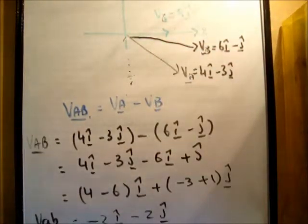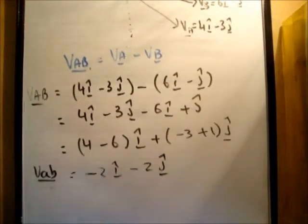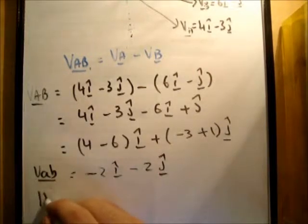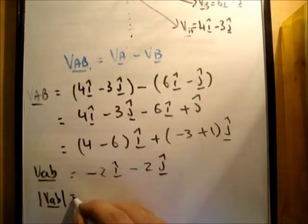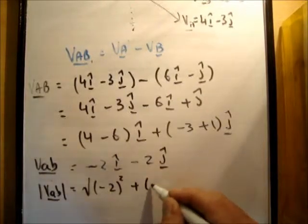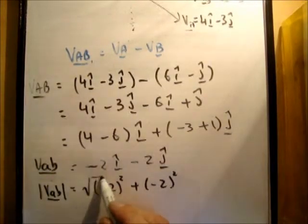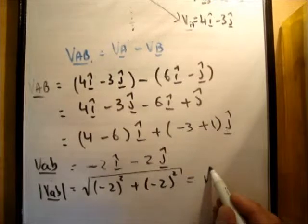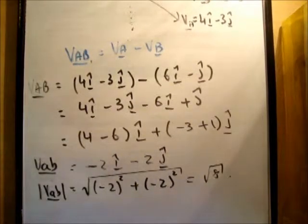So the next thing we need to do is work out the magnitude of this vector. And as I said before, this is just using a bit of Pythagoras. So we get the magnitude of VAB is equal to the square root of negative 2 squared plus negative 2 squared. So that's equal to root of 8. So that's the magnitude of it.